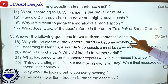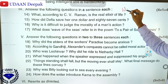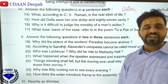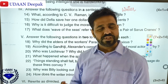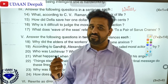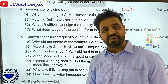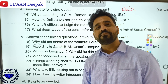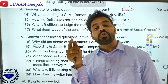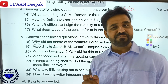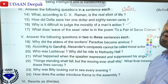What according to C.V. Raman is the real elixir of life? The answer is water. How did Della save her $1.87? Della saved her $1.87 by bargaining with the vegetable vendors, the grocery shop, and the butcher shop. Why is it difficult to judge the morality of man's action? According to Gandhiji, we cannot go deep into the minds of others, so we cannot judge the morality of man's action.